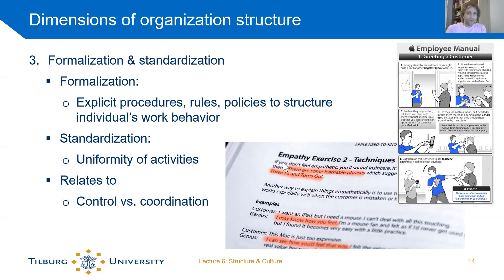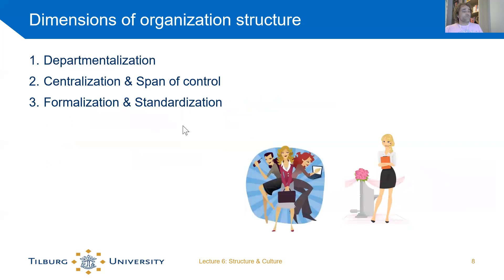Neither is inherently better. If your organization makes a physical product, you want a fairly high degree of formalization to ensure quality control — every product should turn out the same. These three dimensions — departmentalization, centralization and span of control, and formalization and standardization — are the three dimensions to classify an organization's structure.